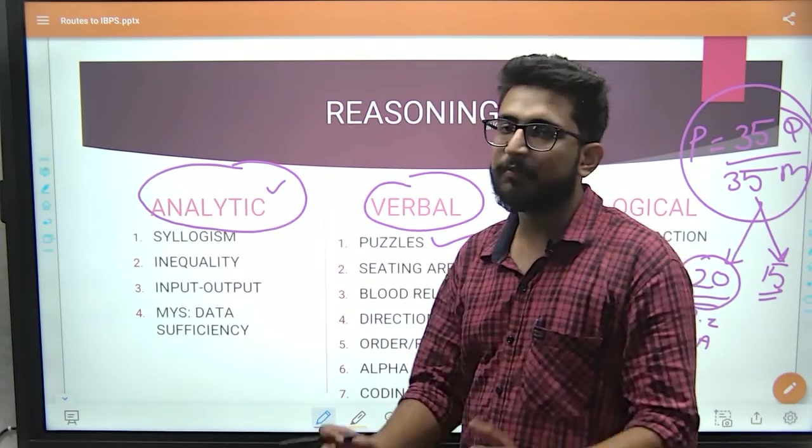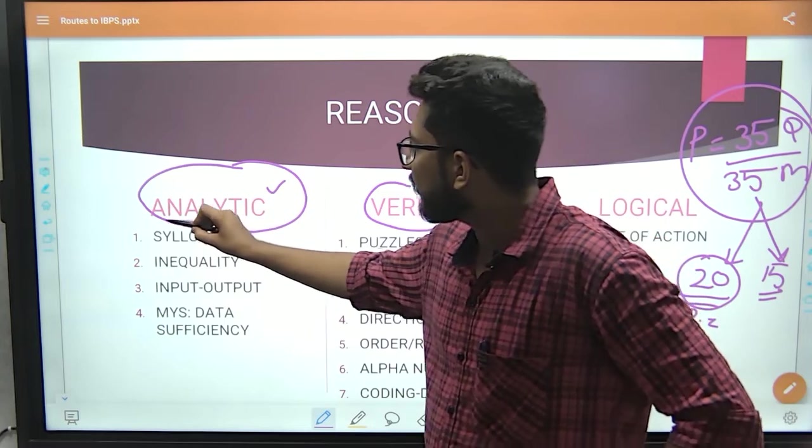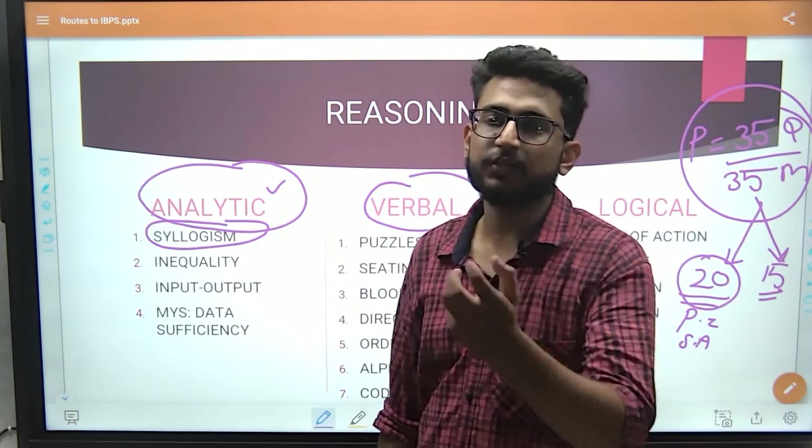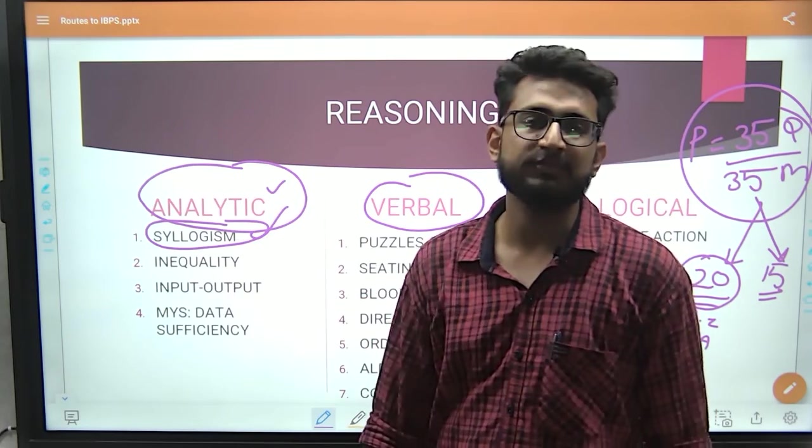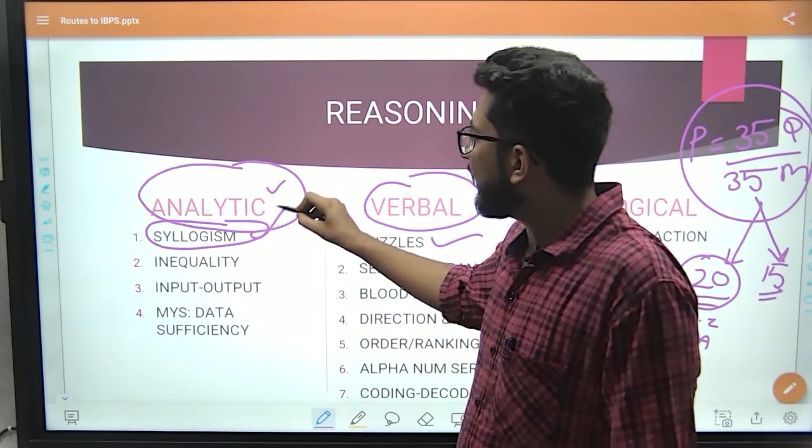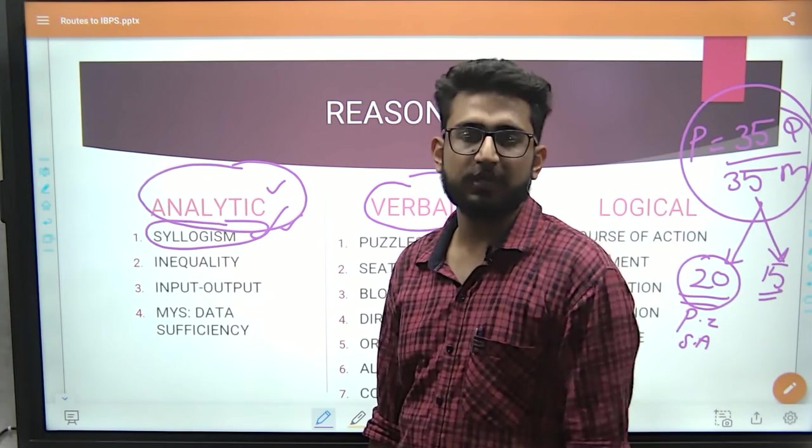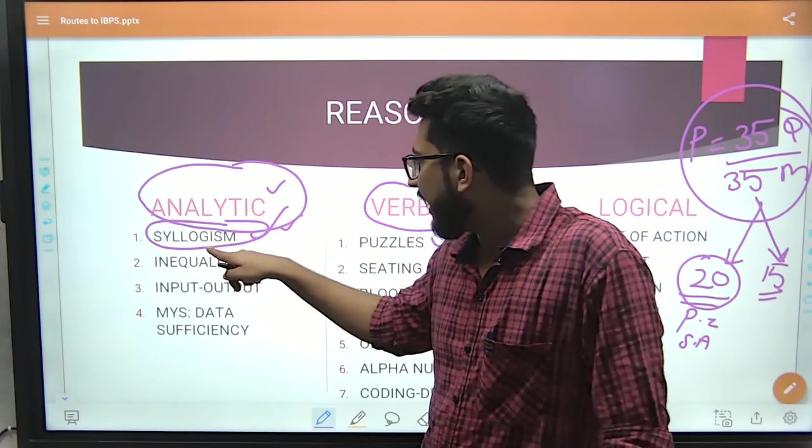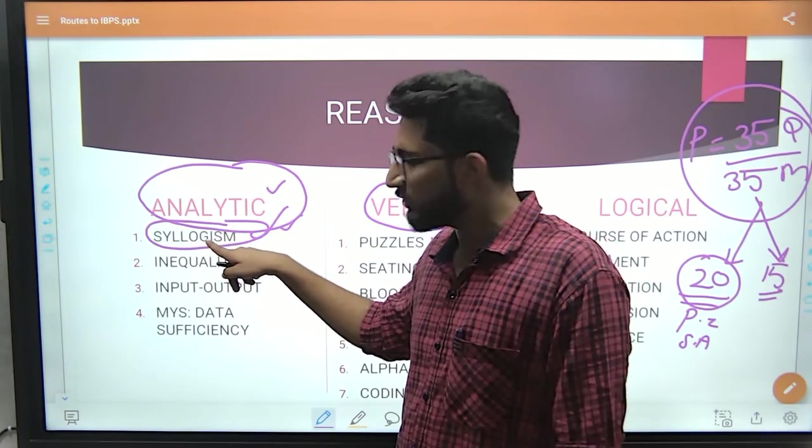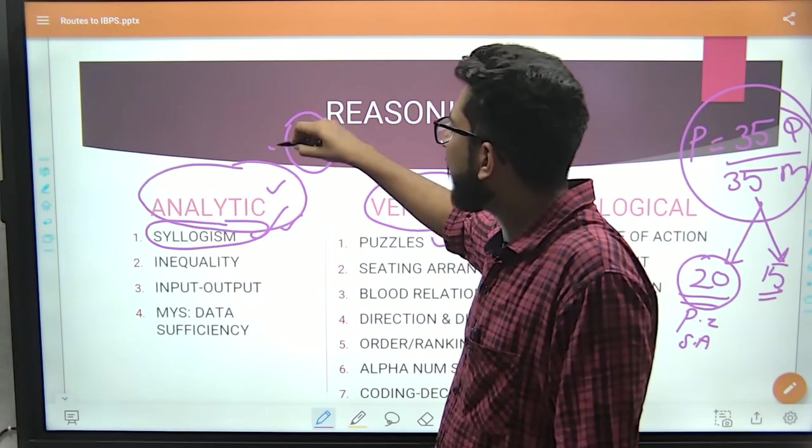So start with the analytic. And in the analytic portion, if you write a mock and let's suppose there is no question attempted, then just prepare syllogism. Syllogism prepare in 1-2 days, hardly 2 days. You have to attempt another mock with a goal. Try to make a target. I have to attempt syllogism. If you have 5 questions, it will be the first time to take 5 marks.